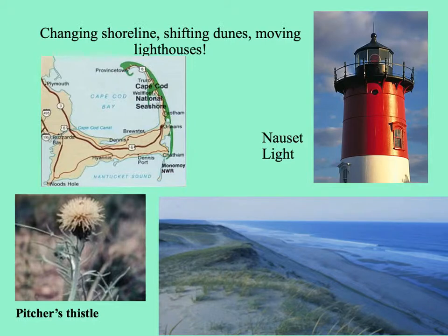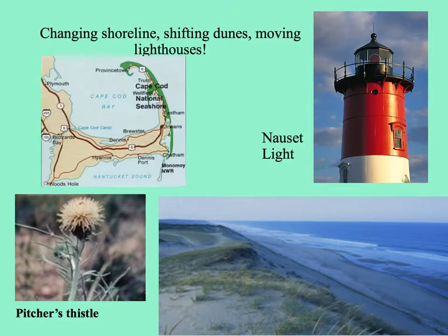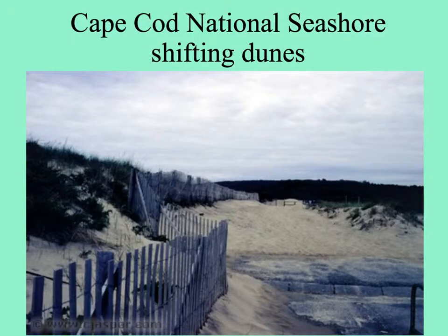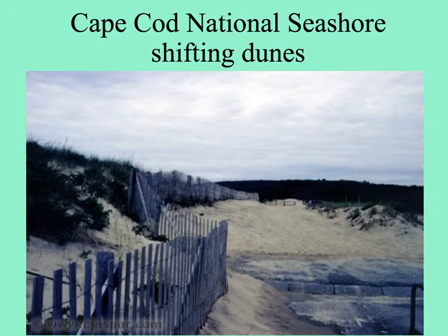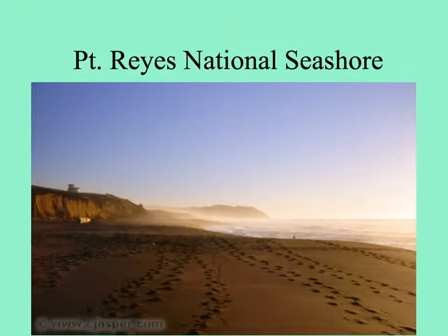Anywhere where there's wave action, shorelines can shift. Places along the shore often have lighthouses — like Nauset Light on Cape Cod — which had to be moved because the land under it was washed away. These habitats have some rare plants too, like pitcher's thistles, which are endangered species in northeastern coastal areas. Sometimes people try to hold back dunes or keep them from moving by putting up fences, which helps keep people from interfering with the natural succession of vegetation to hold the sand down. Here's a picture at Point Reyes National Seashore on the west coast.